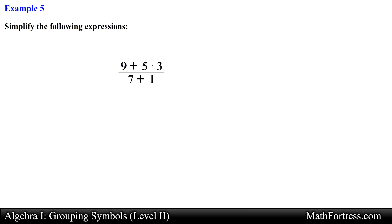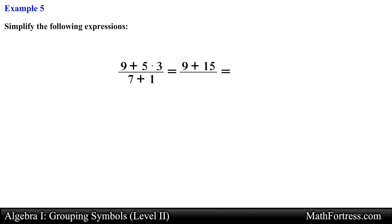Alright, let's try the next one. This expression involves a fraction bar. The first thing we need to do is simplify the numerator and then simplify the denominator, and in the end divide the simplified numerator over the simplified denominator. Working with the numerator first, we take care of 5 times 3 which reduces to 15, and then add 9 which equals 24. In the denominator we add 7 and 1 which gives 8. Then 24 divided by 8 reduces to 3.